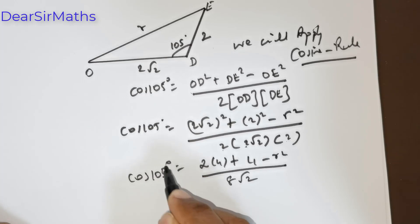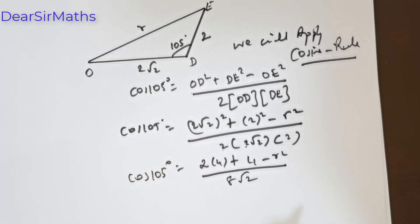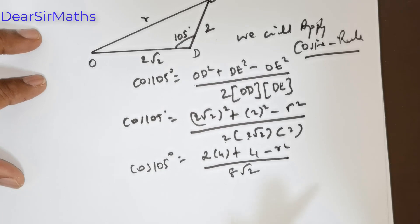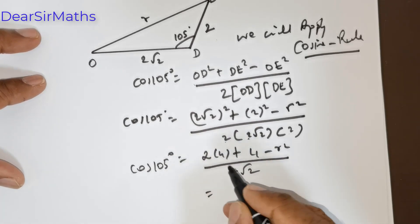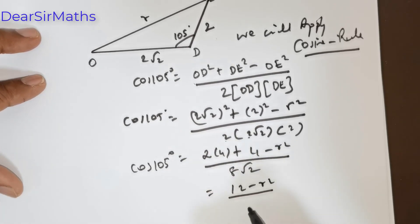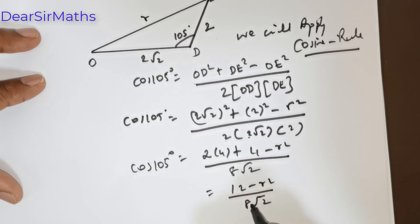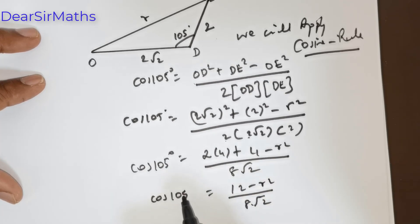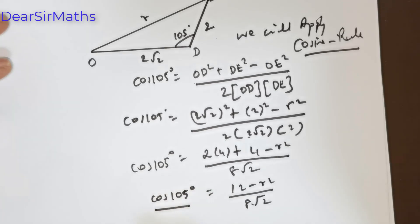(√2)² is 2, so (2√2)² is 8. 2² is 4. So numerator is 8 plus 4 minus R squared equals 12 minus R squared. Denominator is 2 times 2√2 times 2, which equals 8√2. So cos 105 equals (12 minus R²) divided by 8√2. Now I need to find cos 105 degrees.